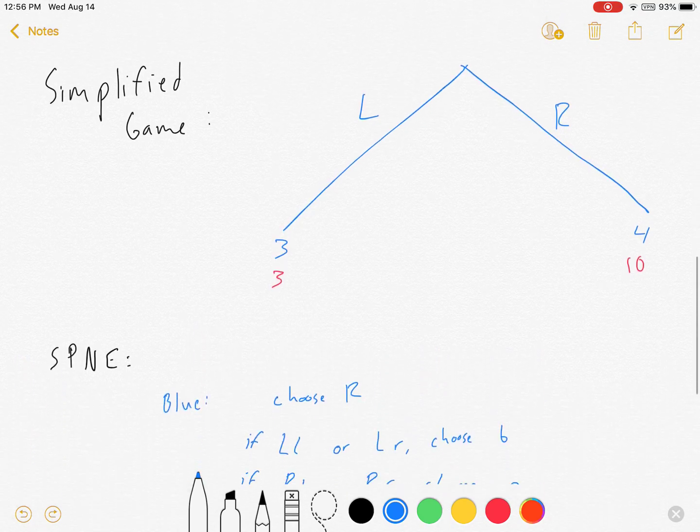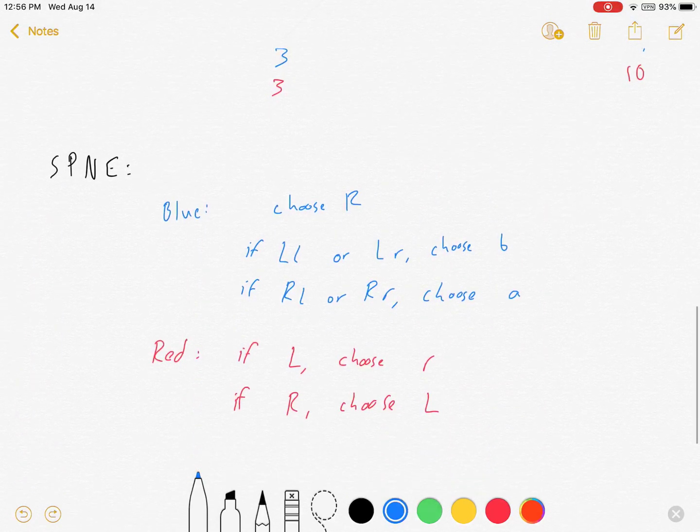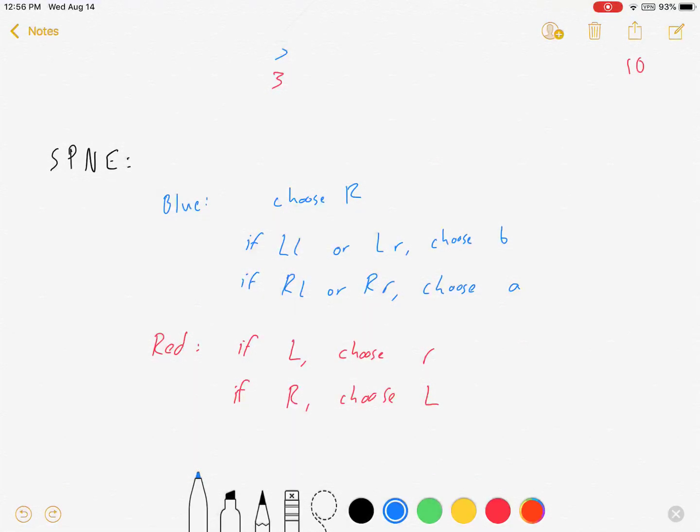Now, what does that mean for our equilibrium? Sub game perfect Nash equilibrium. Blue, choose R. And then we have to say what to do at each node. If we're at LL or LR, meaning if we're in that left game, choose B.